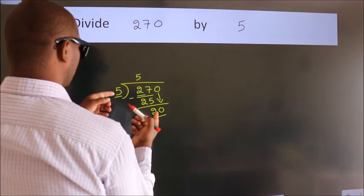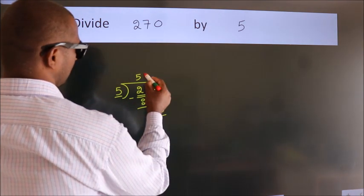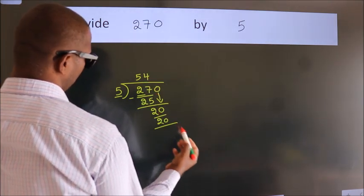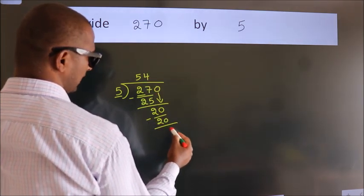When do we get 20? In the 5 table. 5 fours 20. Now we subtract. We get 0.